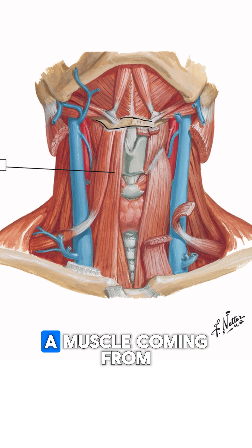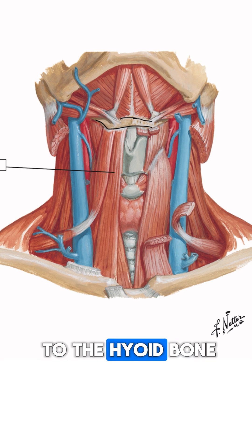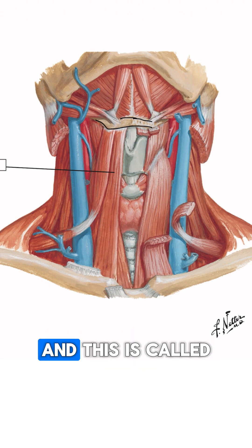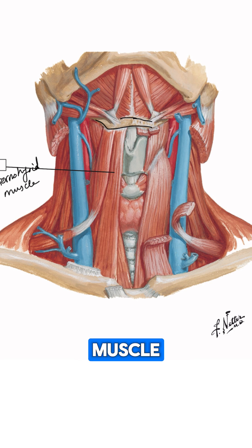The first muscle comes from the sternum all the way up to the hyoid bone, and this is called the sternohyoid muscle.